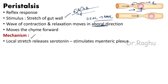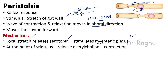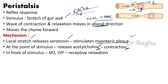The mechanism behind peristalsis: local stretch due to the chyme releases serotonin, which stimulates the myenteric plexus in the gut wall. The myenteric plexus at the point of stimulus releases acetylcholine, causing contraction behind the chyme. In front of the stimulus, the myenteric plexus releases nitric oxide and vasoactive intestinal peptide (VIP), which cause relaxation — producing the wave of contraction and relaxation.